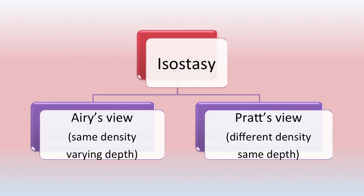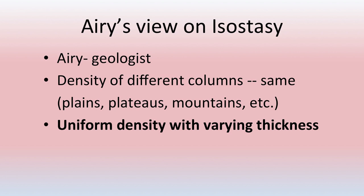Isostasy can be explained with two viewpoints. One is Airy's view of isostasy, which says there is same density but varying depth of various features on the earth surface. Pratt's view says there is different density but the same depth. First we will be dealing with Airy's view: Airy was a geologist and he said the density of different columns on the earth surface — planes, plateaus, and mountains — is the same.